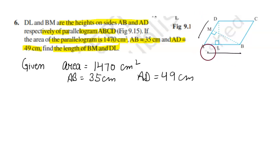AB and AD are given. For AB, the height is DL, and for AD, the height is BM. So area of parallelogram is equal to base into height. Area is 1470, which is equal to AB times height DL. So 1470 equals 35 times DL.